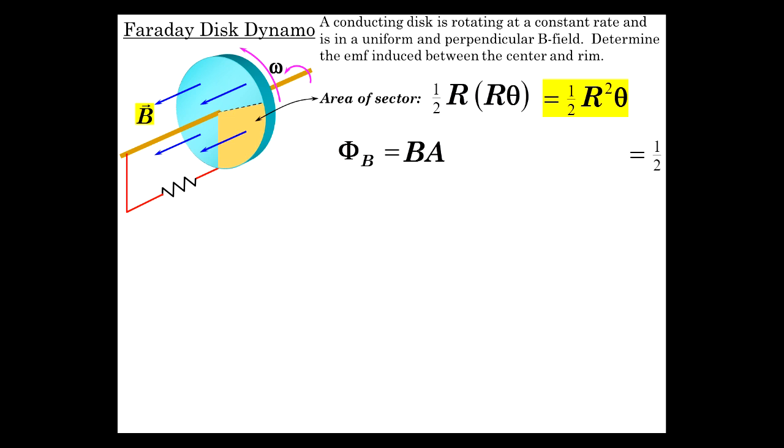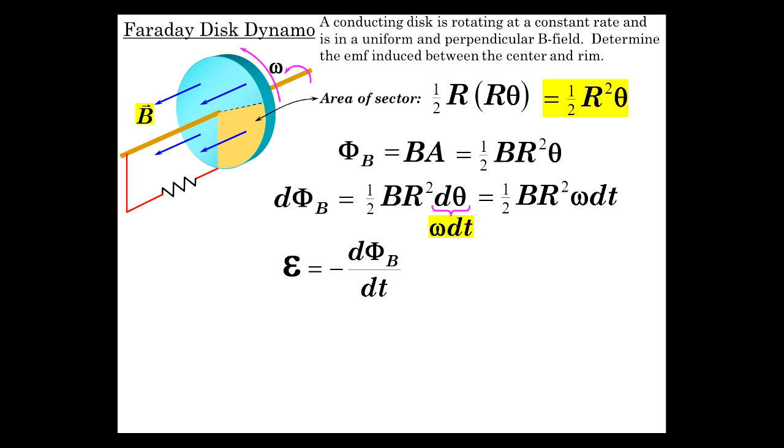The flux is B times area, so it's one half B R squared theta. Differential flux is the same thing but times differential theta. Differential theta relates to omega and time, omega dt. So dΦ is omega dt, giving us one half B R squared omega dt. When we divide by dt, we get induced EMF minus dΦ_B/dt equals minus one half B R squared omega, providing direct current.